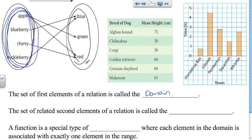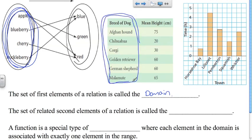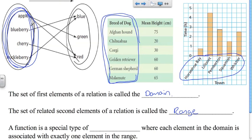In this bar graph, the domain would be the towns. If the first set of elements has a name, it makes sense the second set does too. The set of related second elements of a relation is called the range. So the first set is the domain and the second set is the range. From here on, this is how I'll refer to sets of data within our relations or functions.